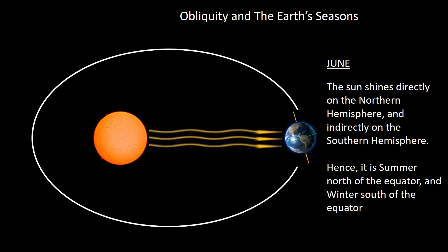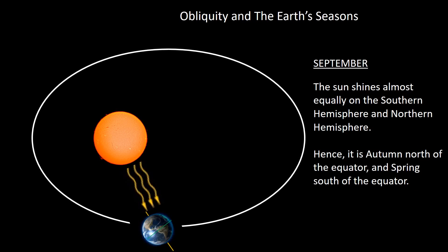In June, the Earth is almost at the aphelion. Because of the actual tilt, the Sun shines directly on the Northern Hemisphere and indirectly on the Southern Hemisphere. This provides summer north of the equator and winter south of the equator. A point to note is that the tilt of the Northern Hemisphere more than compensates for the approximate 6% loss in solar irradiance received at the aphelion. In September, the Sun once again shines almost equally on the Southern and Northern Hemispheres, resulting in autumn north of the equator and spring south of the equator.